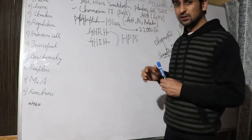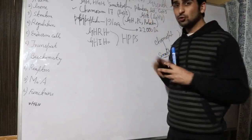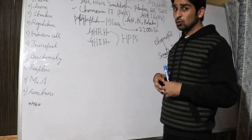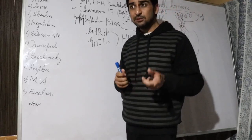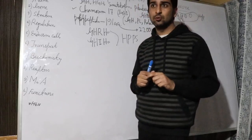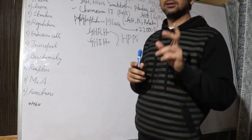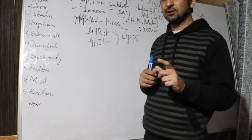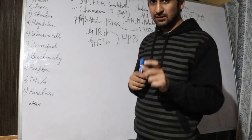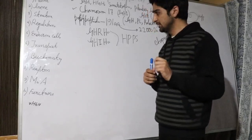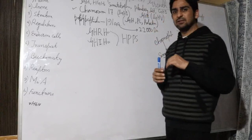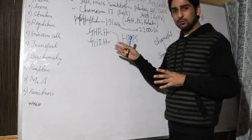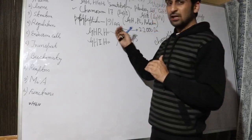The regulation of growth hormone is controlled by various stimulators and inhibitors. Growth hormone release can be stimulated by deep sleep, exercise, fasting, and hypoglycemia. Inhibitors include hyperglycemia and increased free fatty acids in the blood circulation. The net balance between the releasing and inhibiting hormones determines the level of growth hormone release.